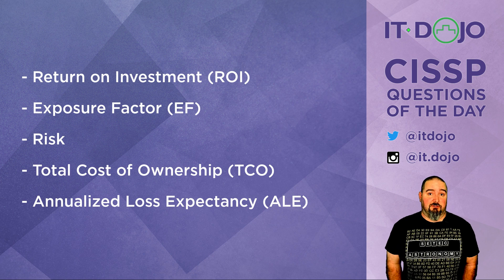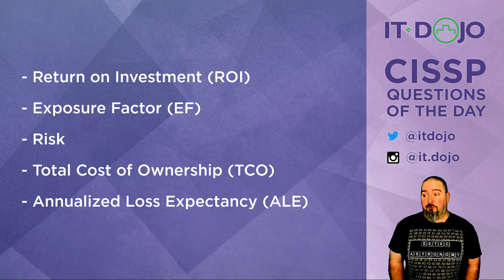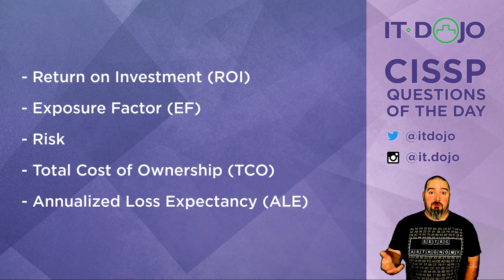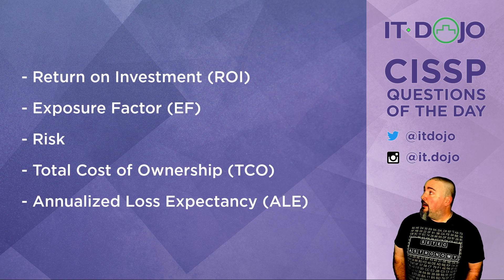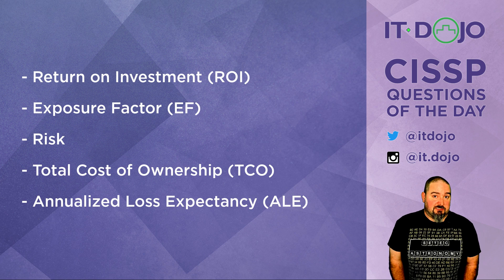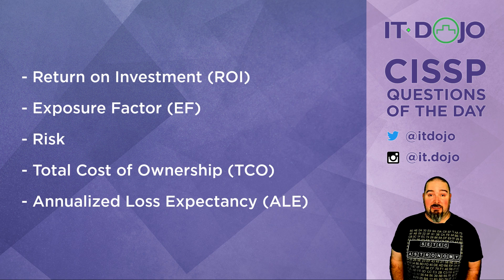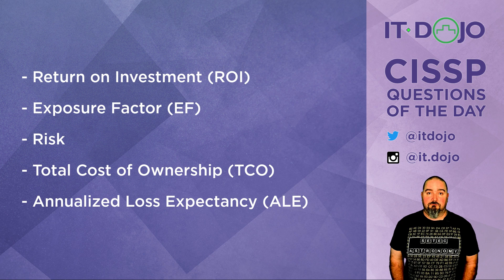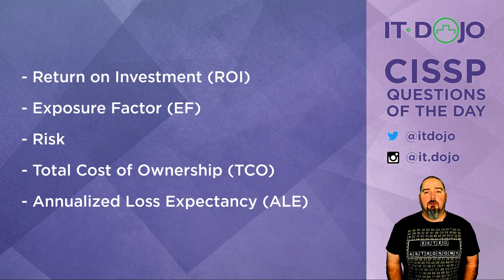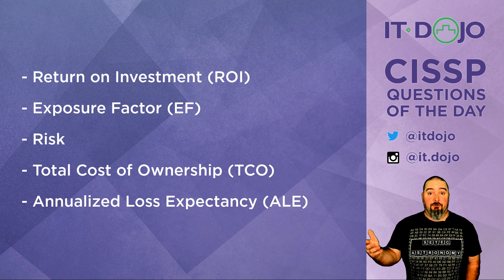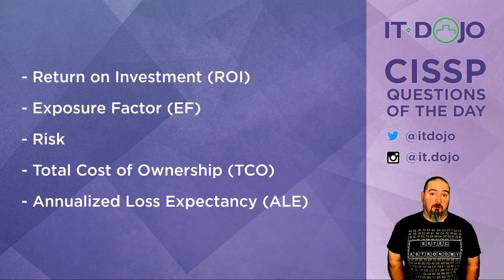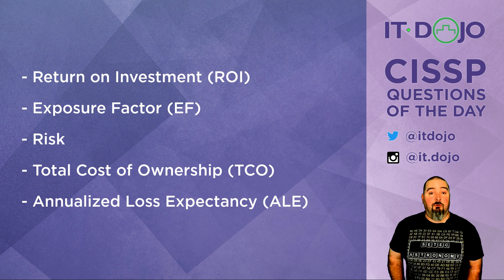Next choice: exposure factor. No. Exposure factor is the percentage of an asset that is damaged when an incident occurs, always expressed as a percentage — and that is not what results from single loss expectancy and annualized rate of occurrence. Risk? Not today. Total cost of ownership? Again, no. Total cost of ownership is the sum total of all costs associated with a particular safeguard — not what we're looking for here.